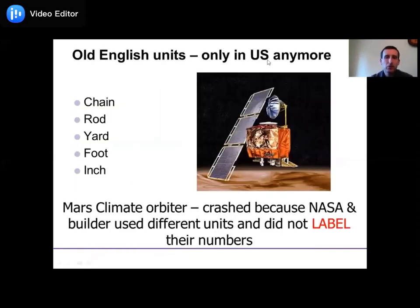Only the US uses the English system. These units are in our textbook because we live in the US and many of you will work here, so they're still relevant. In the scientific community, even within the US, the shift has been to metric units. This creates confusion because the scientific community still needs equipment built by outside companies, and American companies tend to use English units.